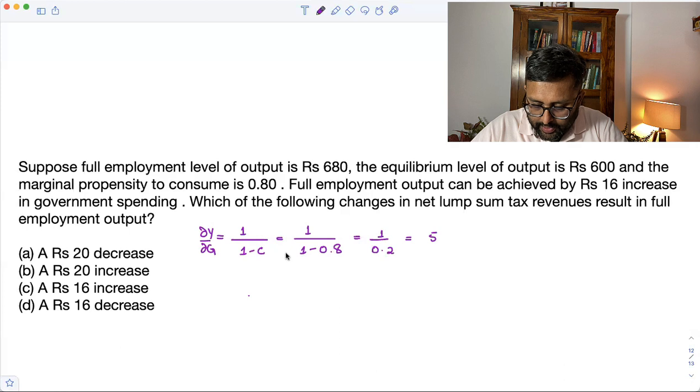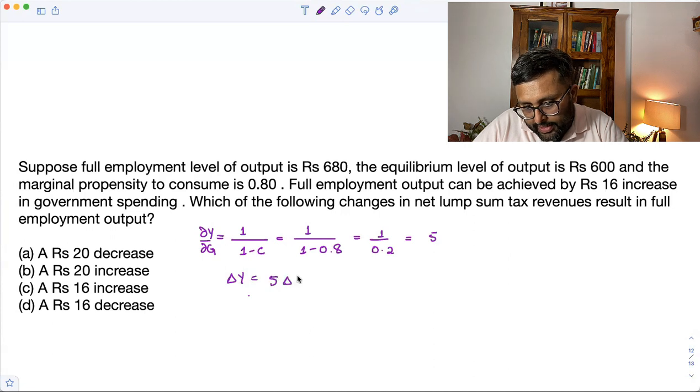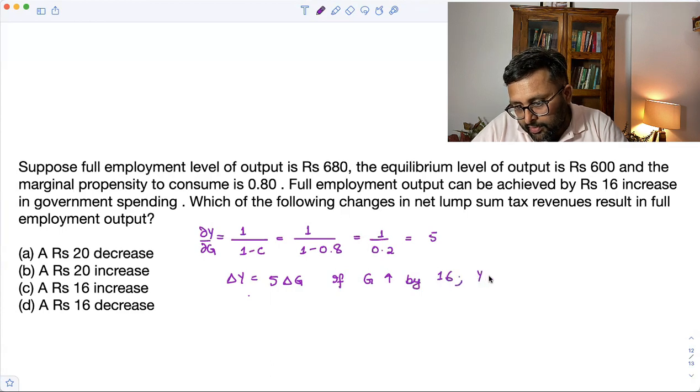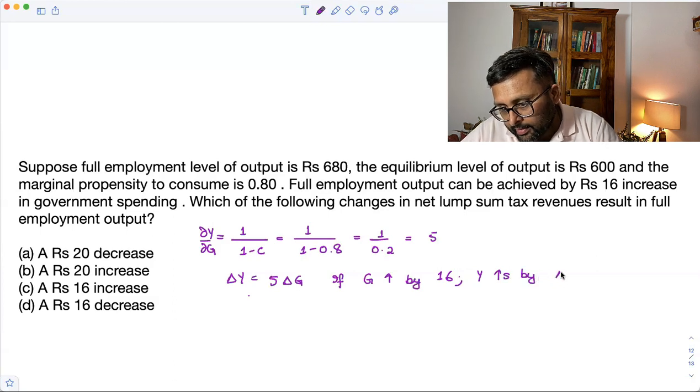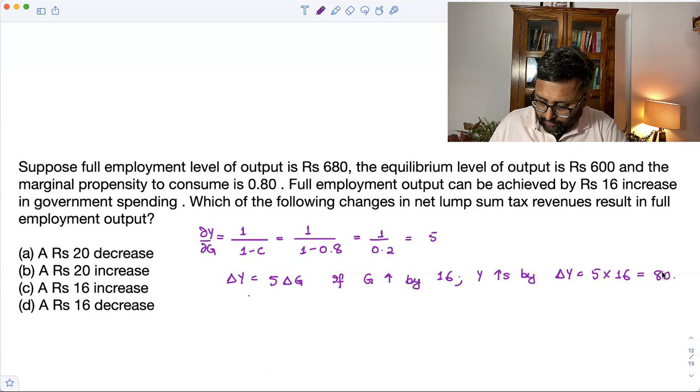That is 5, right? So it means that delta Y equals to 5 delta G, right? So this means that if G increases by 16, then Y increases by delta Y, 5 into 16. That is 80. One thing.